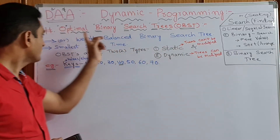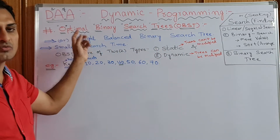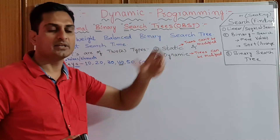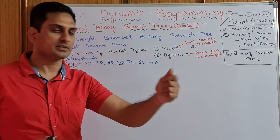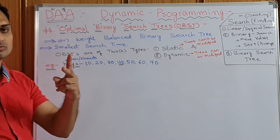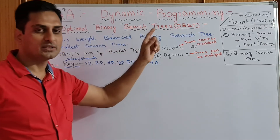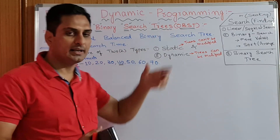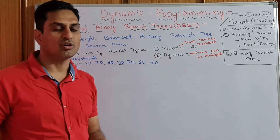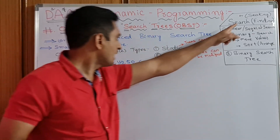Optimal means best out of all. Generally, dynamic programming means a sequence of decisions. Binary means two. Search means finding. Tree means a tree-like structure with branches, just like a tree.